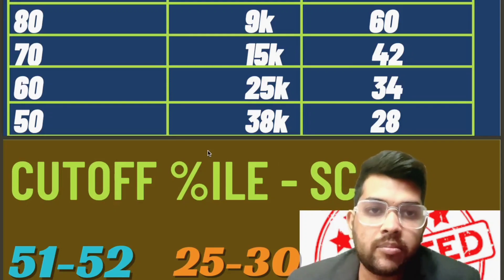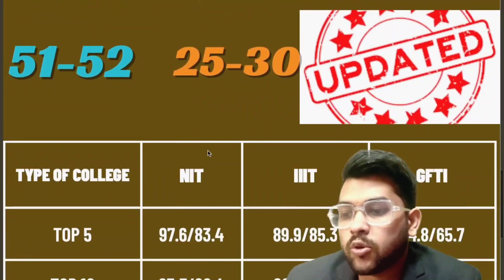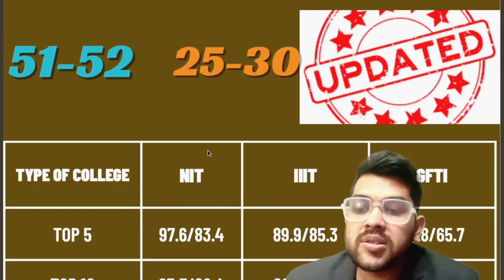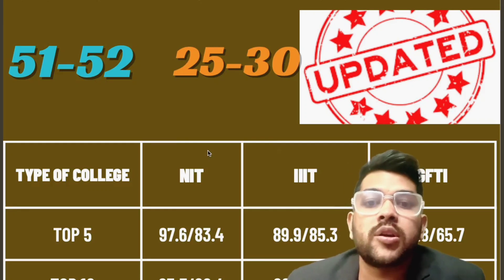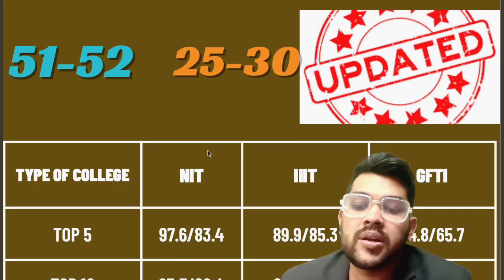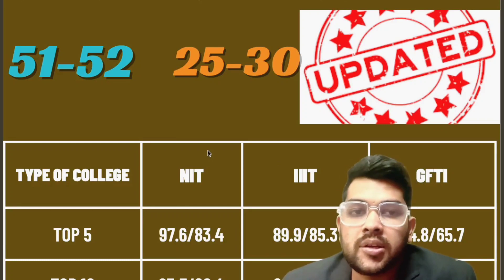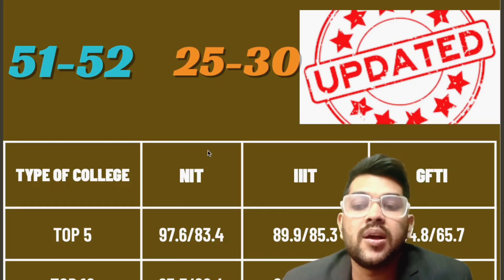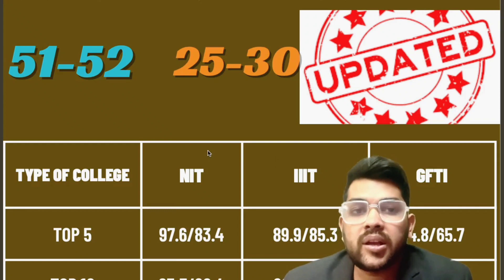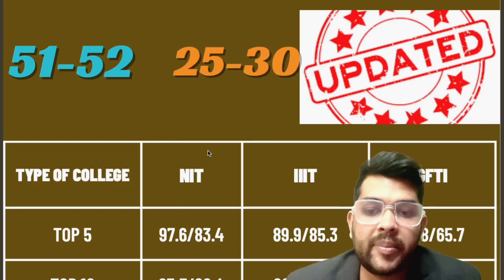There is a nominal charge for mentorship as it takes a lot of time. Now let's look at the safe scores for colleges. For top 5 NITs, 97.6 percentile is required for CSE and 83.4 for lower branches. For top 5 Triple ITs, 89.9 percentile for CSE and 85.3 for lower branches. Triple IT lower branch requires more percentile than NIT lower branch because in Triple IT the lowest branch is EC, whereas NITs have branches like mining and production which are less in demand.